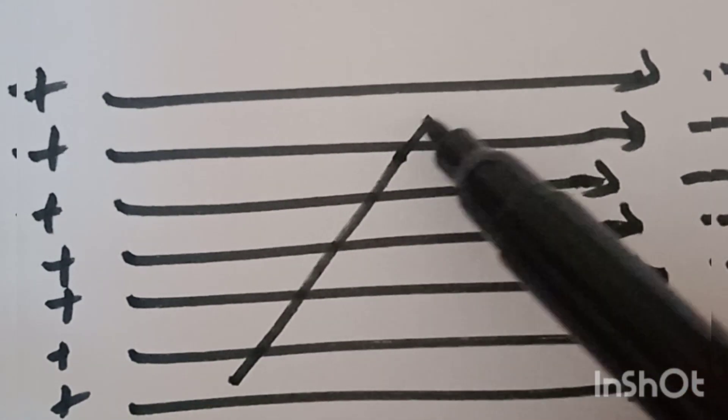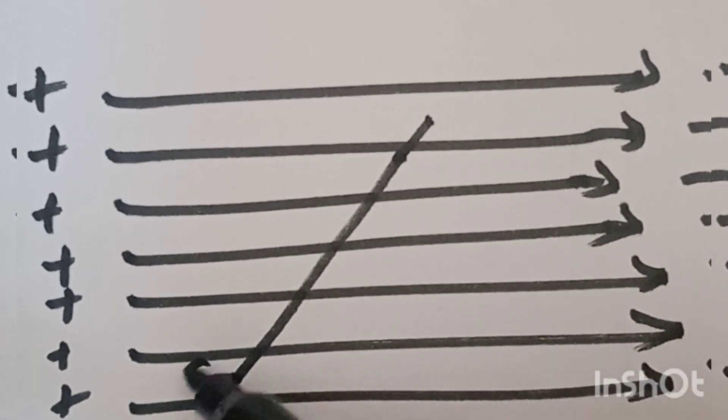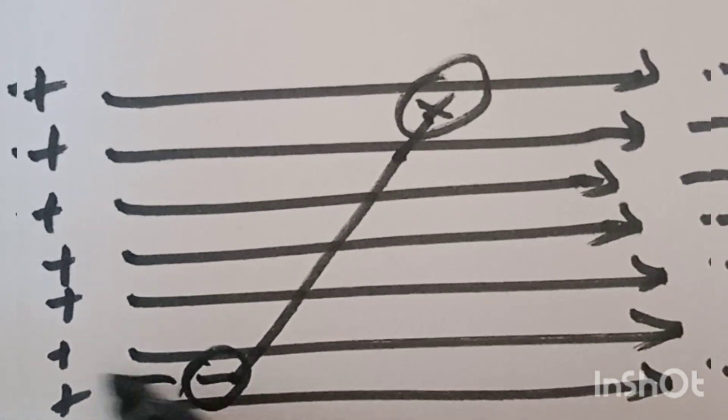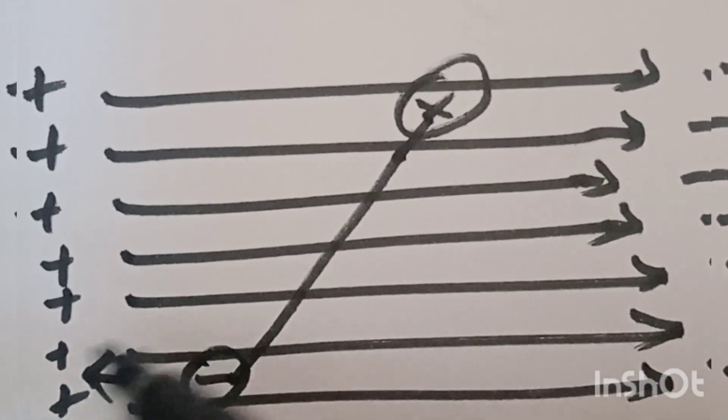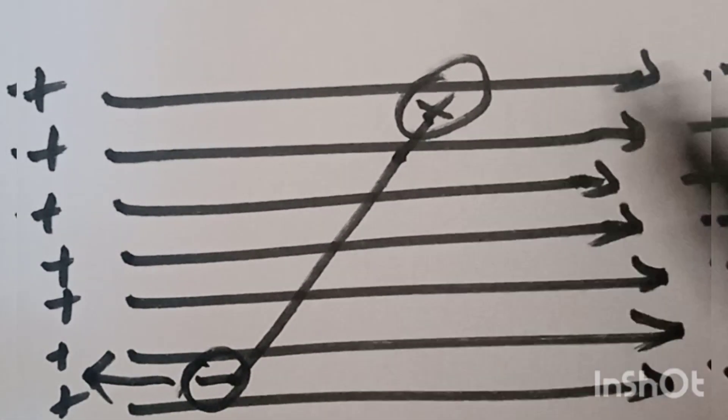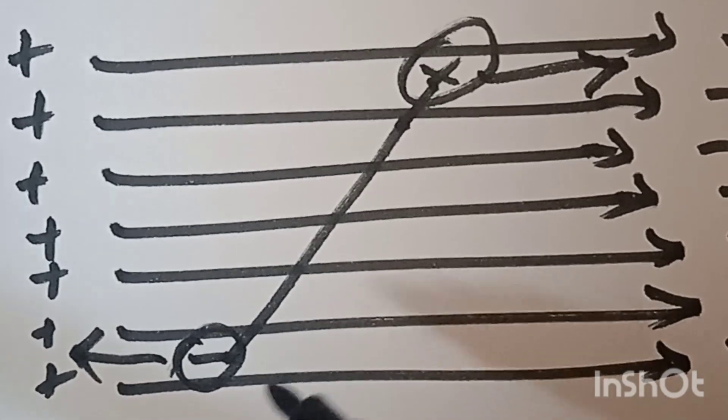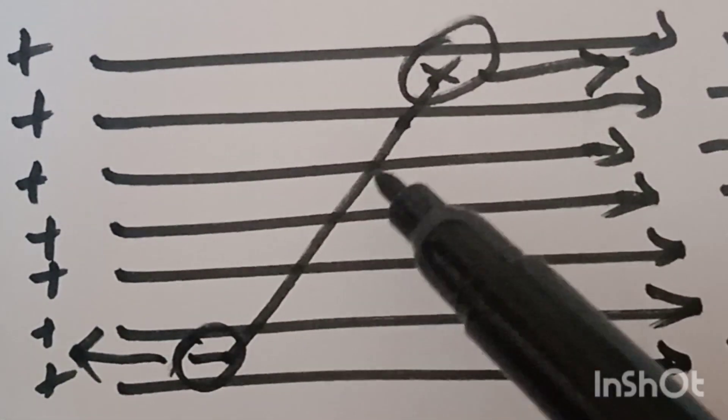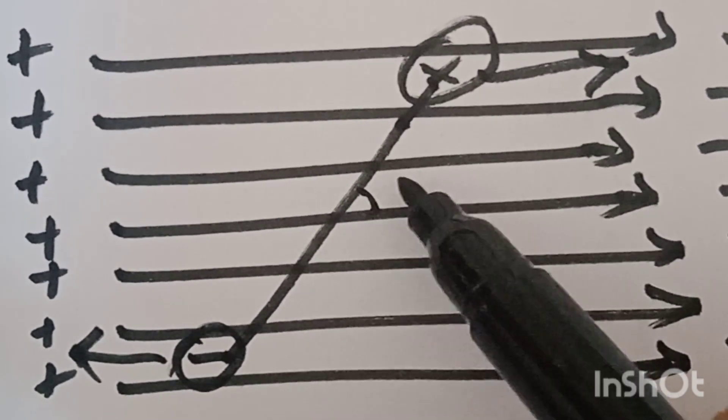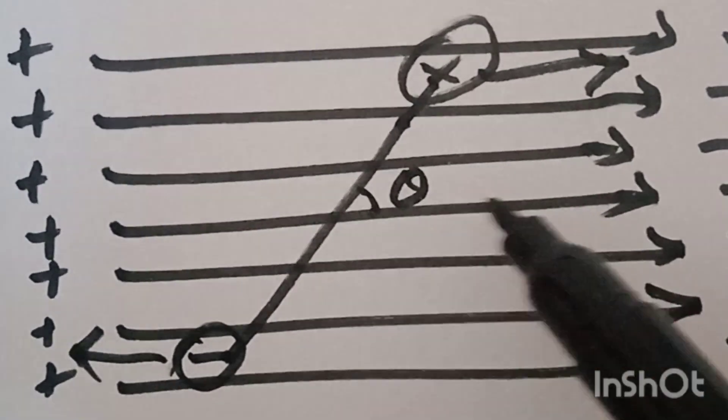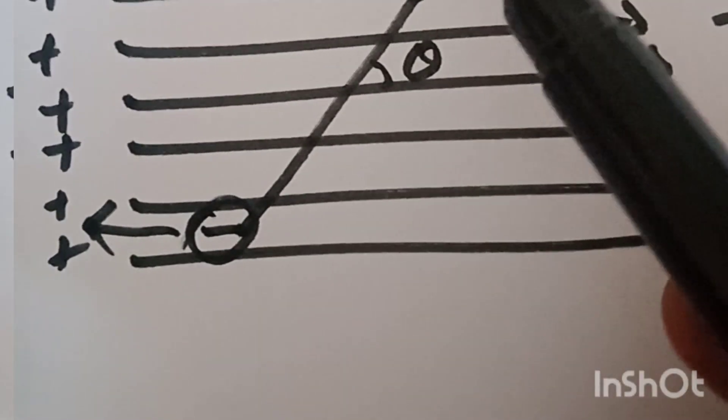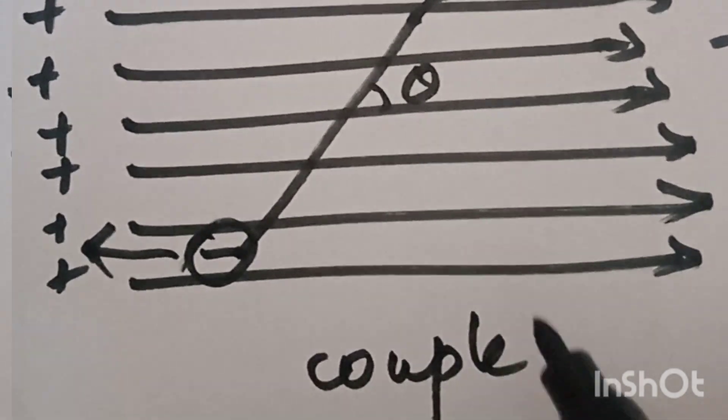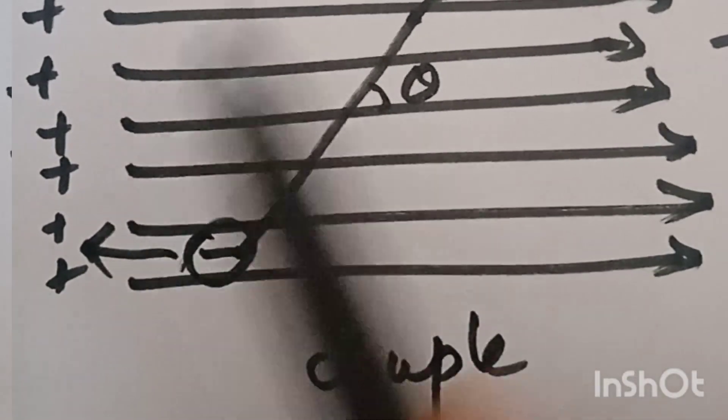In a uniform field, left to right, the field is positive. We place a dipole in this field. A dipole has equal and opposite charges separated by a particular distance. In this field, forces act on the dipole. Two charges experience equal and opposite forces.